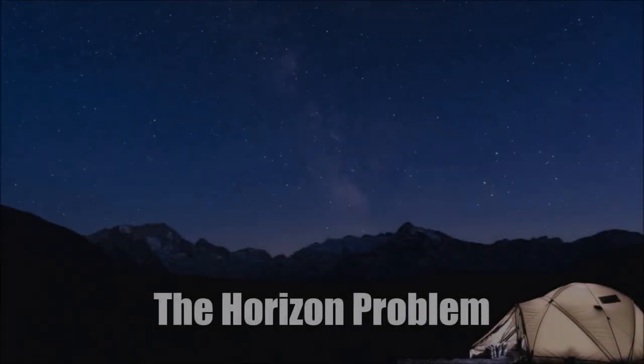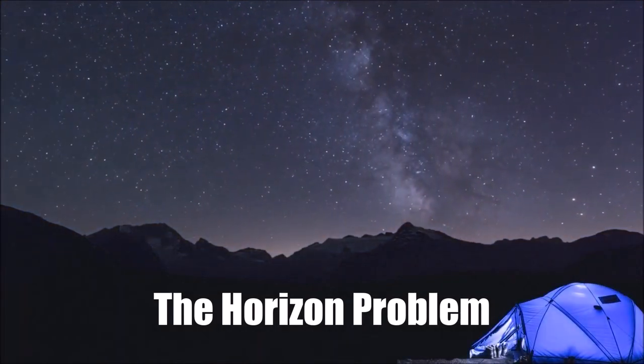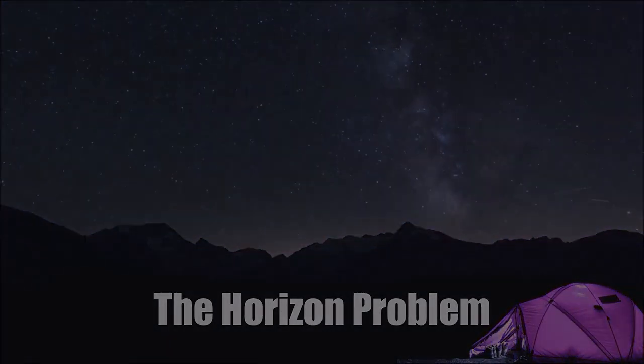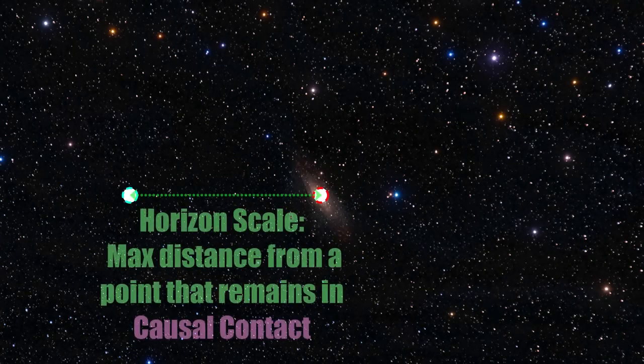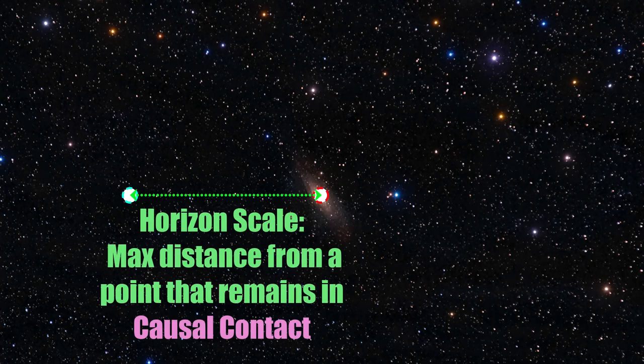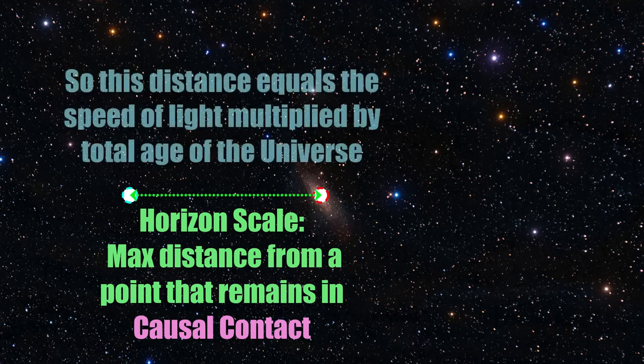Let's get straight into it with what's known as the horizon problem. To begin with, let's define the horizon scale as the physical distance between two points in space which are close enough to be in causal contact with each other. Since light is the fastest moving thing in nature, if we work out the maximum distance that light could have travelled since the beginning of the universe, around 13.8 billion years ago, to now, that gives us the horizon scale.